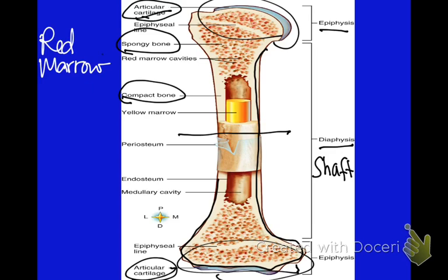Inside of our shaft, we find our yellow marrow, and this is lots of fat in our yellow marrow. When you're starving to death, the very last fat reserve that your body is going to tap into is going to be your yellow marrow. This is why dogs love to chew on bones, and why hyenas love to chew on bones.